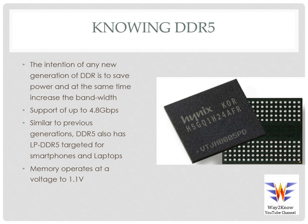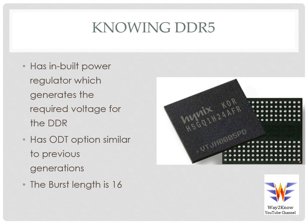DDR5 operates at a voltage of 1.1 volts, which is very low. One important feature that differentiates DDR5 from previous generations is that the voltage is generated internally by an on-chip regulator. This gives the advantage of restricting power to a particular location, generating less noise. It also has similar on-die termination like previous generations, and the burst length is around 16 for DDR5, which is a key reason for its higher speed.